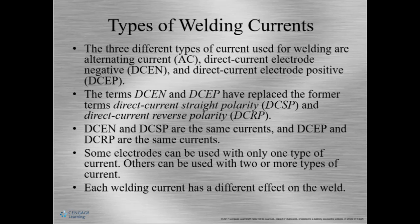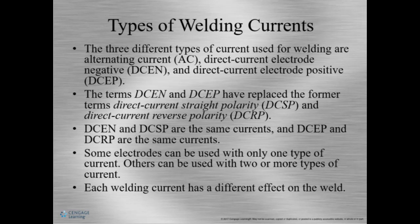There are three types of currents used for welding: AC or alternating current, DCEN or direct current electrode negative — an older term for that would be direct current straight polarity — DCEP or direct current electrode positive, and an old term for that would be direct current reverse polarity. Each type of current has different effects on the weld.